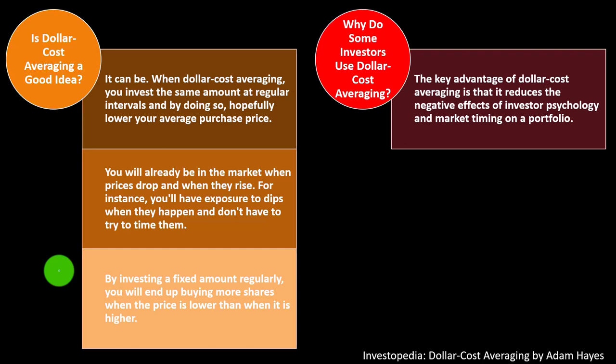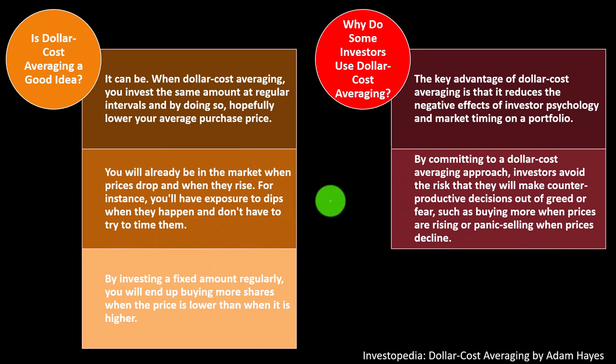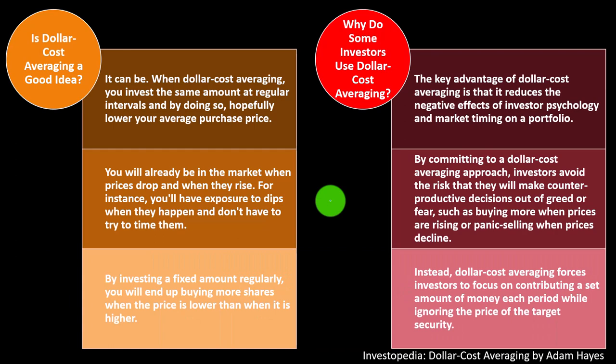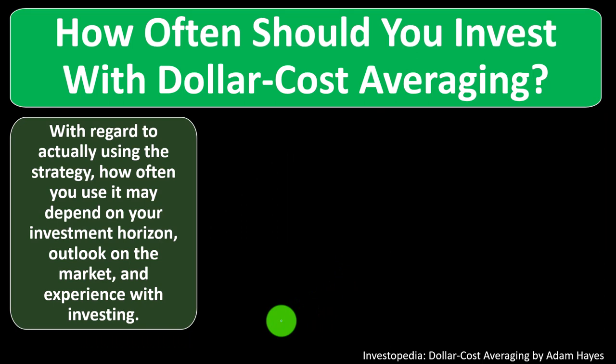The key advantage of dollar cost averaging is that it reduces the negative effects of investor psychology and market timing on a portfolio, giving you less stress. By committing to a dollar cost averaging approach, investors avoid the risk that they will make counterproductive decisions out of greed or fear — such as buying more when prices are rising and panic selling when prices are declining. Instead, dollar cost averaging forces investors to focus on contributing a set amount of money each period while ignoring the price of the target security.